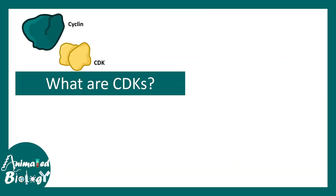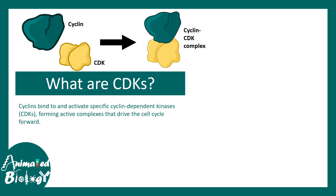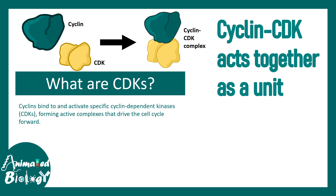And what are CDKs? CDKs are cyclin-dependent kinases. They are kinase molecules capable of phosphorylating, but they are highly dependent on their partner, which is cyclin — it's like they are a couple. Without cyclin, CDK cannot perform any work. So cyclin and CDK act together as a unit — this is the take-home message.